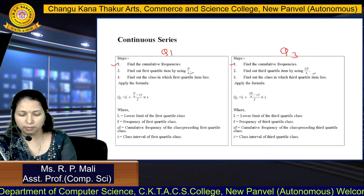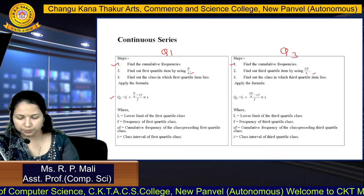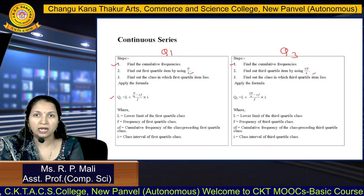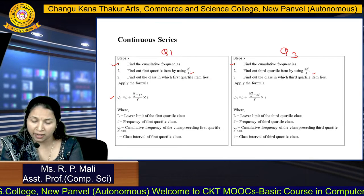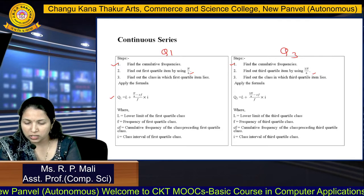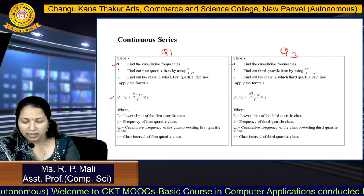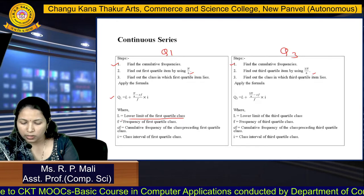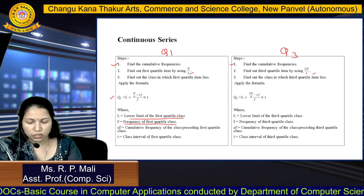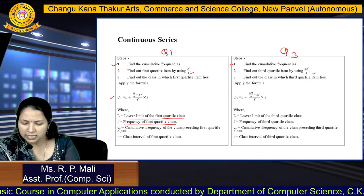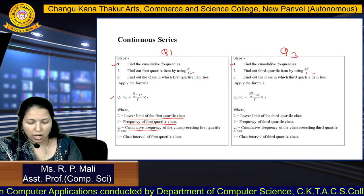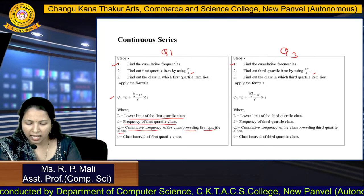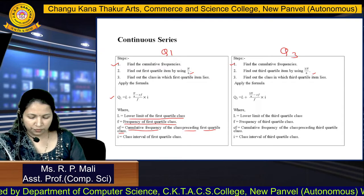After that, we are going to apply the formula. The formula for Q1 is: Q1 equals L plus n by 4 minus Cf divided by F into I. Where Q1 is the first quartile, L is the lower class limit of the first quartile class, F is the frequency of the first quartile class, Cf is the cumulative frequency of the class preceding the first quartile class, and I is the class interval of the first quartile class.